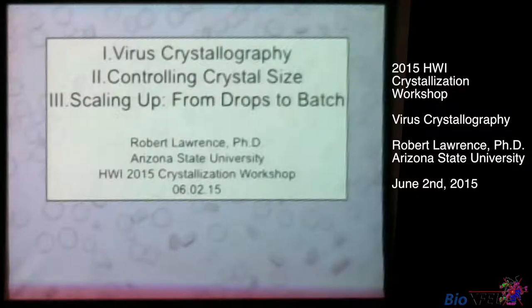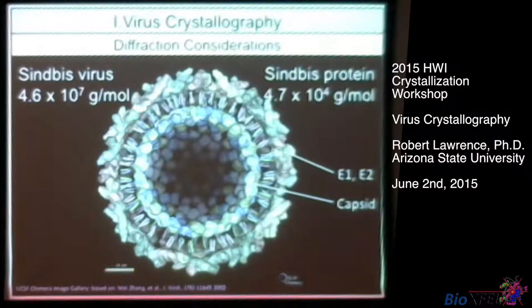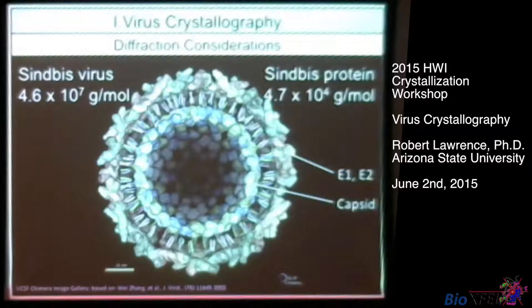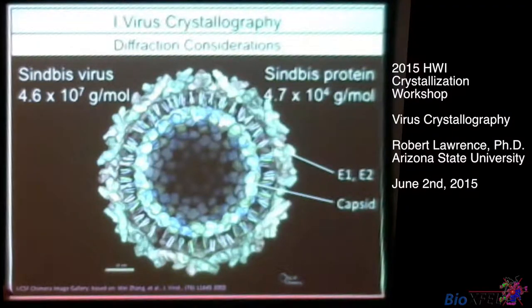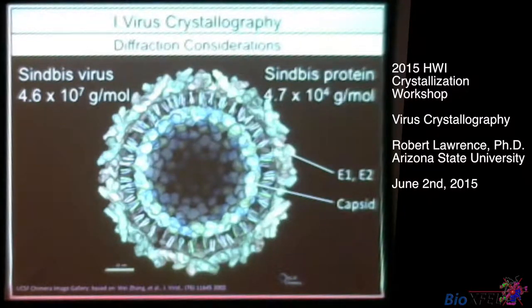Here's an image of endoviruses, which is what I primarily work with. This is a nice diagram where you can see the envelope proteins on the outside and the capsid proteins on the inside, with RNA on the inside as well. I start with this image to provide a perspective of the size difference between a virus and a protein. The constituent proteins of the virus would be like E1 and E2, and the E1 protein is 4.7 times 10 to the fourth grams per mole. The mass of the virus as a whole particle is about three orders of magnitude larger than that.